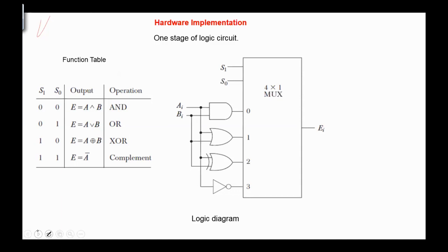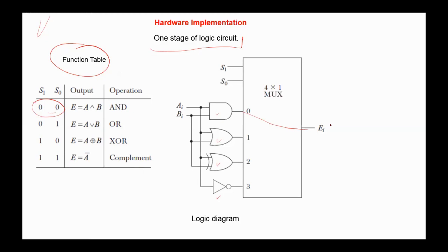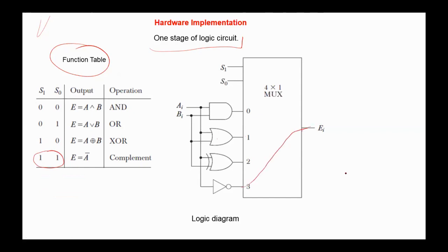Also in the previous videos, I explained the hardware implementation of logic functions. We have here one stage of a logic circuit used to implement four logic operations — AND, OR, exclusive OR, and NOT — according to the given function table. For example, on 0,0 select, we have A AND B. On 0,1 select, we have the OR operation. On 1,0, exclusive OR. And on 1,1, complement A. Again, this is one stage of the logic circuit, and it should be repeated N times where N is the size of the register.